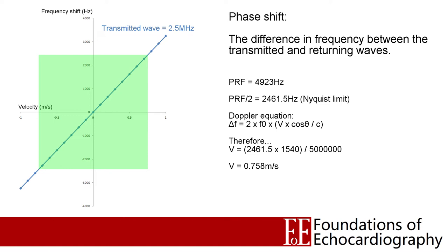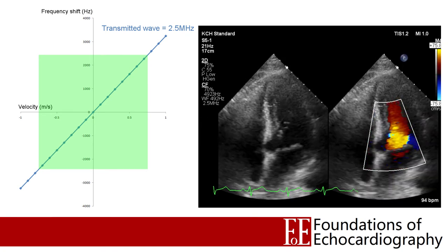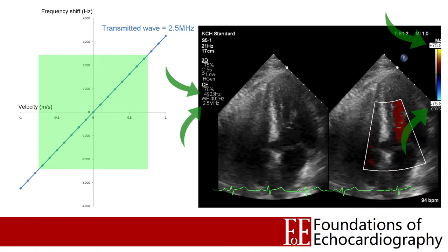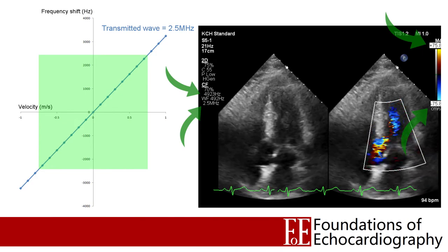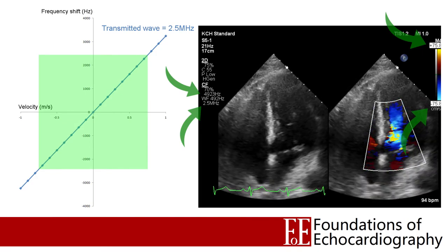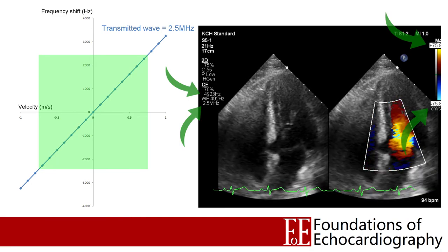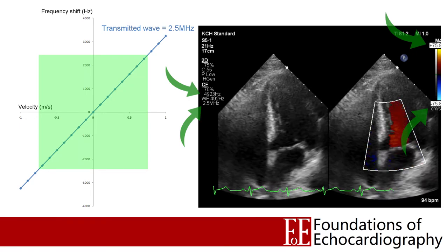Any velocity up to 75.8 cm per second is going to produce a frequency shift within our detectable range, but any velocity in excess of this value will produce a frequency shift we can't accurately describe. On the clip you can see the colour scale on the far right of the image, and the ultrasound software is telling you that with the settings as they are, the maximum velocity that can be displayed is the 75.8 cm per second that we anticipated. When the observed velocity exceeds the upper bounds of the scale, this is when aliasing occurs.